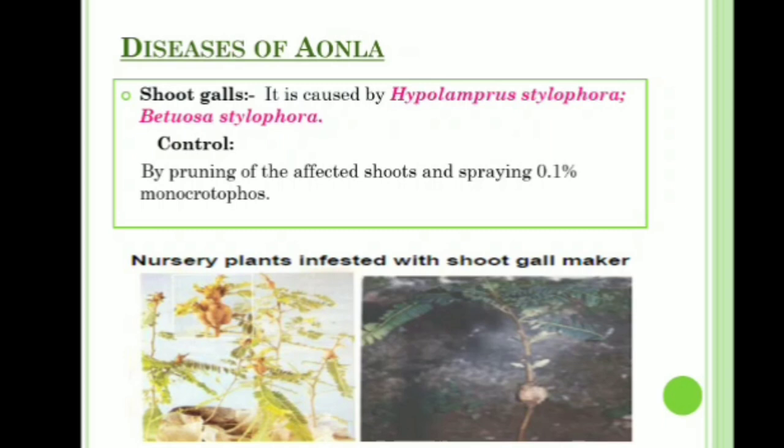Shoot cause disease is caused by Hypolamprus stylophora and Batocera stylophora. Control: pruning of the affected shoots and spraying with Monocrotophos 0.1 percent.